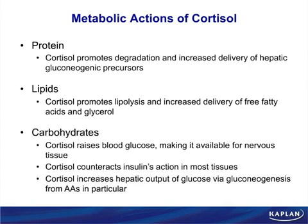Carbohydrates go up — we're raising glucose — and the major purpose is making it available for the brain. Cortisol blocks the effect of insulin in most tissues; cortisol is a direct anti-insulin. So everything said about cortisol, the exact opposite is true with insulin. Cortisol also produces glucose via gluconeogenesis by taking proteins, converting them into amino acids, so those amino acids can be used to make sugar.